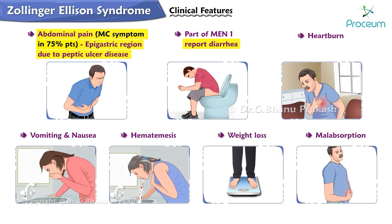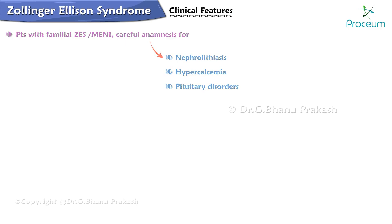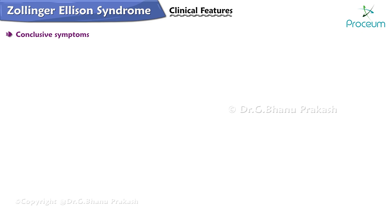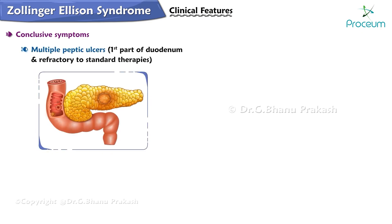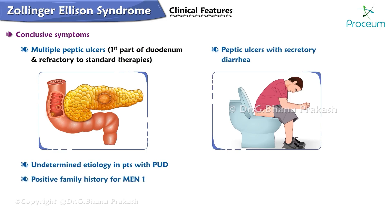In patients with familial Zollinger-Ellison syndrome and MEN1, a careful history for nephrolithiasis, hypercalcemia, and pituitary disorders should be undertaken. Conclusive symptoms indicating Zollinger-Ellison syndrome include multiple peptic ulcers in the first part of the duodenum refractory to standard therapies, peptic ulcers with secretory diarrhea of undetermined etiology, positive family history of MEN1, and presence of symptoms like kidney stones or increased prolactin levels.